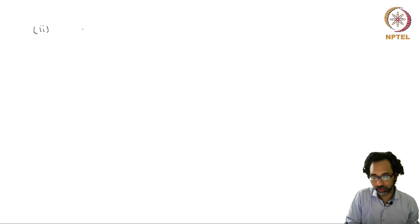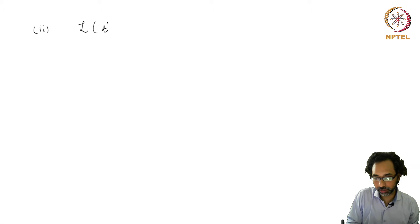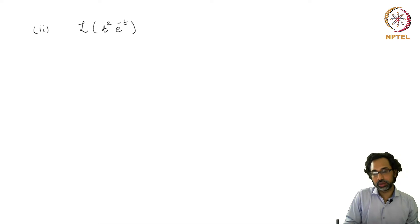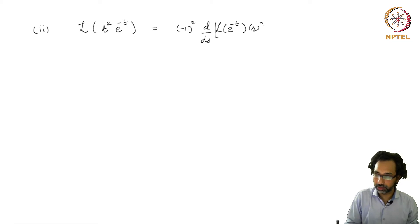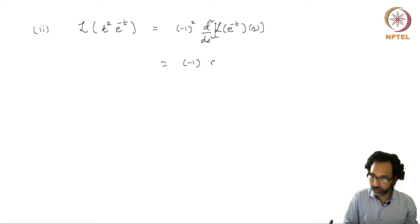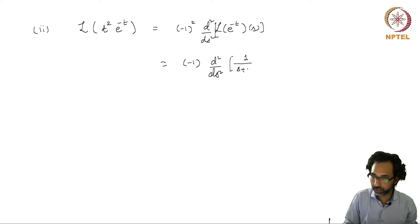Let us see another example. We will compute the Laplace transform of t squared times e^(-t). We know that this is (-1)² times the second derivative with respect to s of the Laplace transform of e^(-t). The Laplace transform of e^(-t) is simply 1/(s+1).